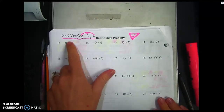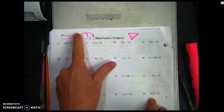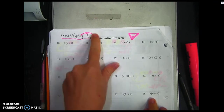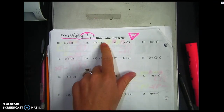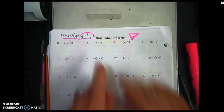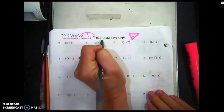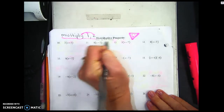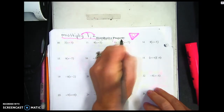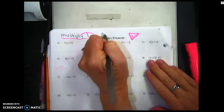What I want you to do right now is copy this down. This is called the distributive property. The distributive property means that you're giving.